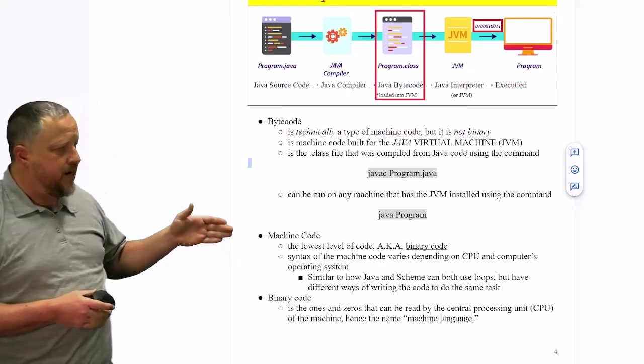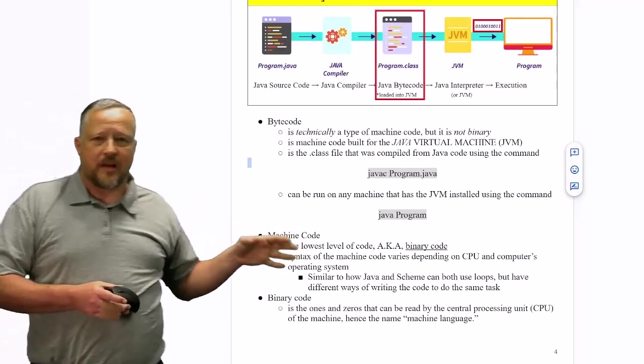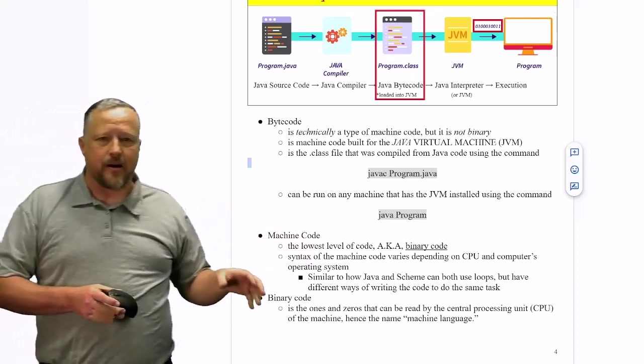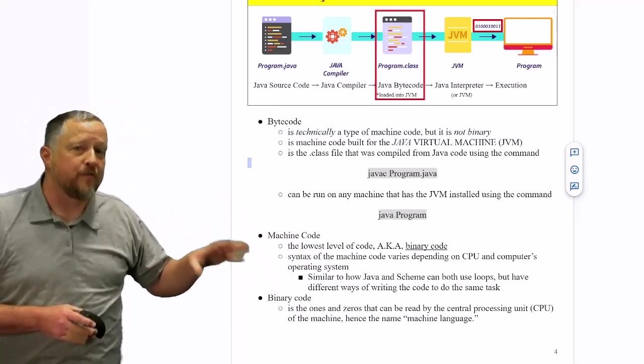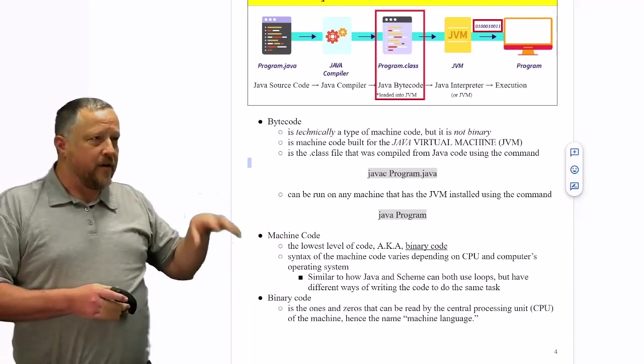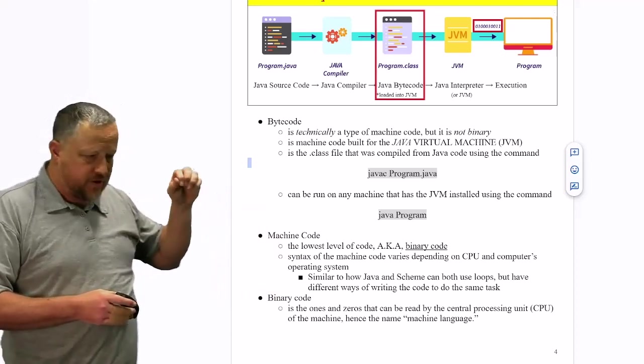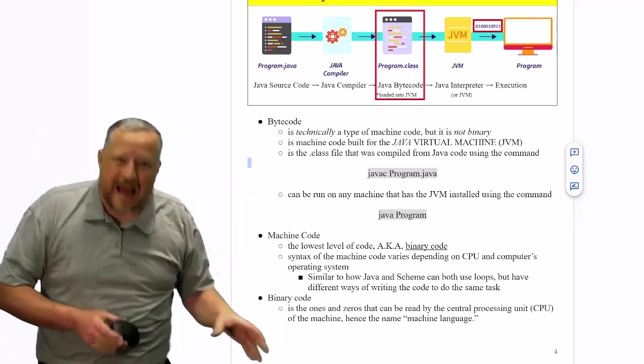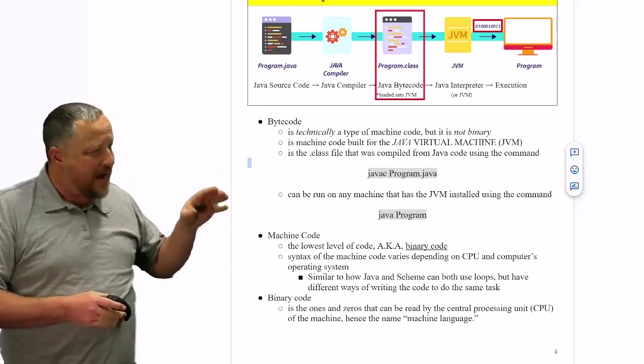When we get to the machine code, that's the lowest level or aka the binary code, getting it to run for that very specific machine, that very specific CPU setup, that very specific architecture that that particular computer has.